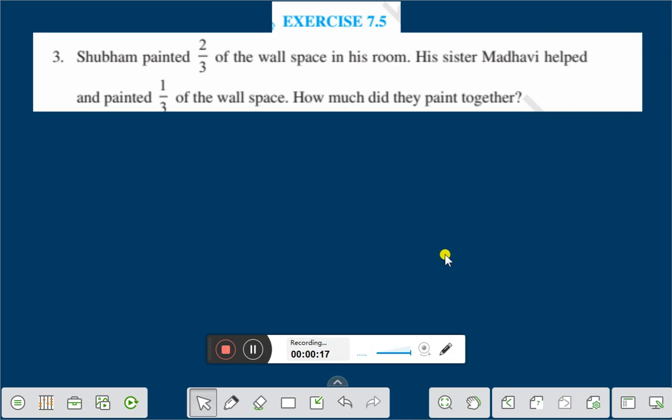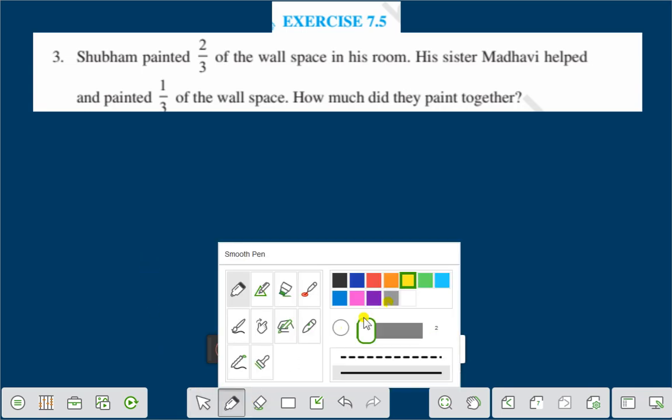How much did they paint together? Here you see that Shubham painted 2/3 of the wall and Madhavi painted 1/3 of the wall space. How much did they paint together? That means you have to add the fractions. Right? Let us add.